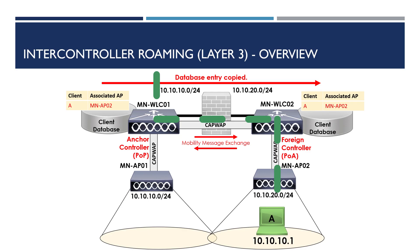There are two additional roles introduced during layer 3 roams: POA, point of association, and POP, point of presence. The point of association role identifies both the controller and AP where the client is currently associated. In our example, client A is associated to WLC02, so WLC02 is the POA. Notably, the POA role moves with the client as it roams — if the client roamed to WLC03, that controller would take the POA role. The point of presence refers to the controller where the client can be accessed. A common mistake is thinking this role is assigned to the controller the client first associates to — this is incorrect.